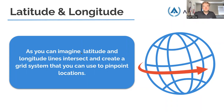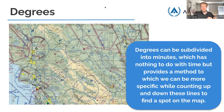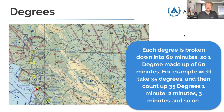Latitude and longitude lines intersect and create a grid system you can use to pinpoint locations. Every single line of latitude or longitude can be divided into degrees, and degrees can be subdivided into minutes — which has nothing to do with time; it's just a way to be more specific. Fun fact: minutes can also be subdivided into seconds. Just like there are 60 minutes in an hour, there are 60 minutes in a degree, and every minute can be subdivided into 60 seconds.